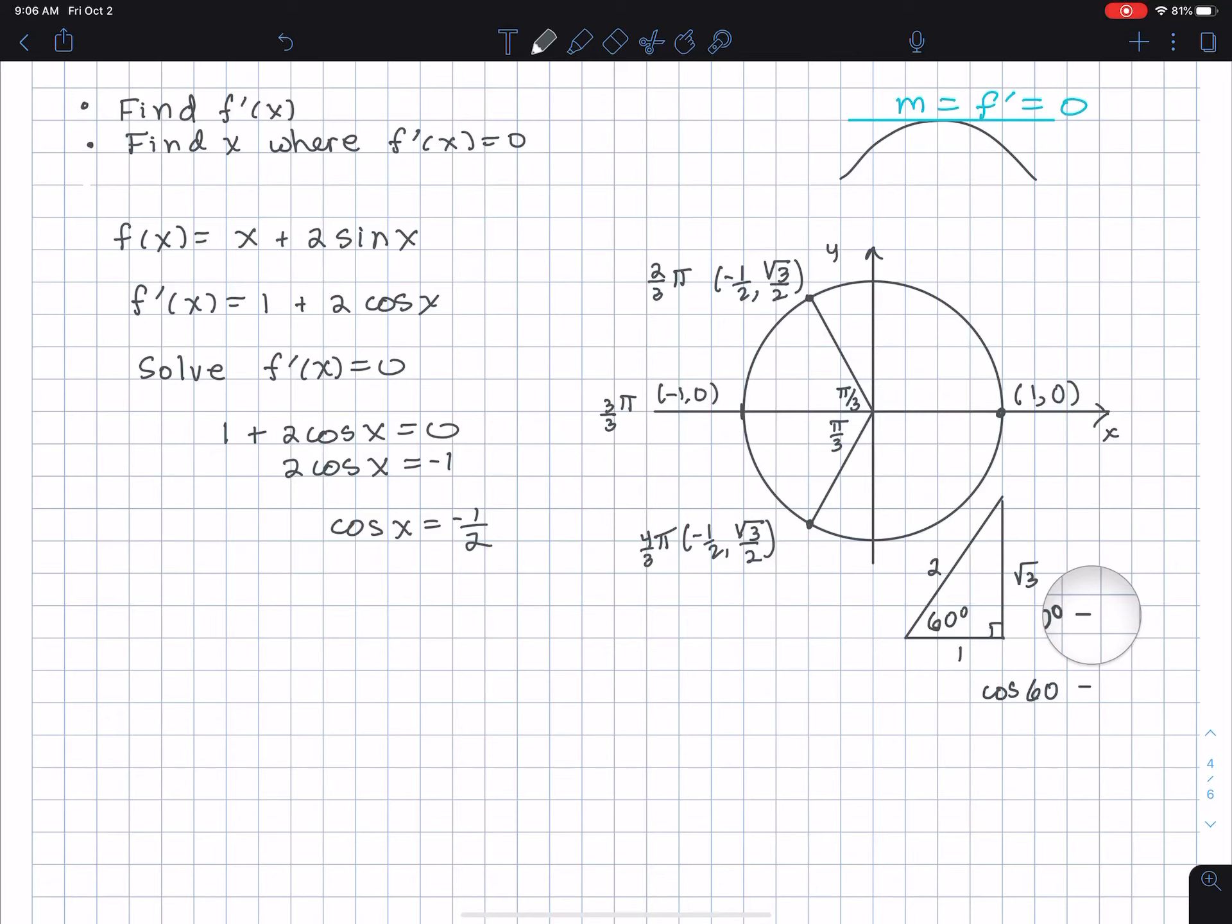Just by memorizing the 30-60-90 right triangle. So the reference angle is 60 degrees, which is π/3. There are different ways to approach finding the values of x. So I have x = 2π/3 and x = 4π/3.